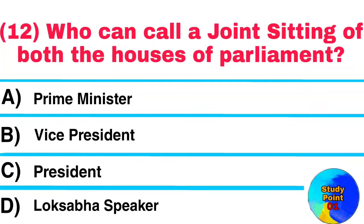Question No. 12. Who can call a joint sitting of both the houses of parliament? Answer: President.